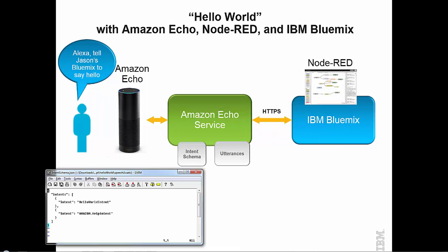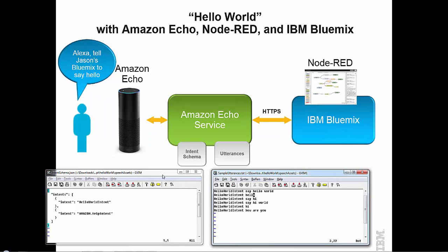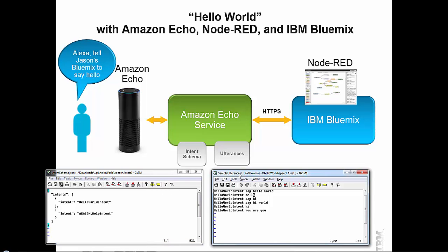We're going to use the example ones that come from the hello world sample application. We'll have an intent schema with a hello world intent — that's all we need. There's also a help intent used by default in case someone asks for help with your skill. The utterances file defines what phrases the person can say to invoke that hello world intent. This comes from the sample downloads available from Amazon.